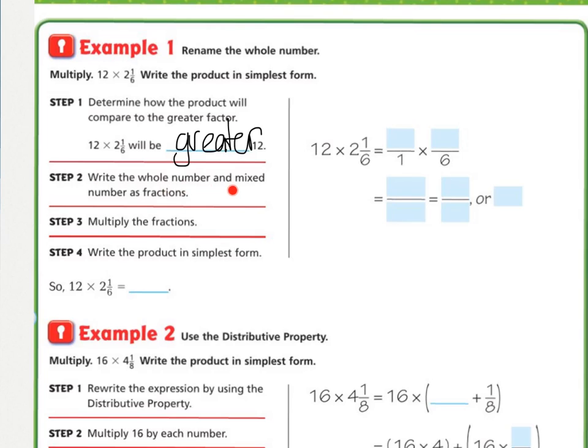Now step two, write the whole number and mixed numbers as fractions. So we know for 12 to make that become a fraction, all we do is put it over one, because 12 divided by one is still 12. Then our mixed number as an improper fraction, six times two is 12, plus one is 13. And now we're going to multiply those. We would go 12 times 13 over one times six. You should have got 156 over six, 12 times 13. Right here I did 144 because I knew that was 12 times 12, and then I added one more 12, so that makes 13 twelves. So 156 over six.